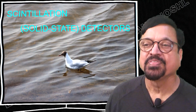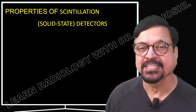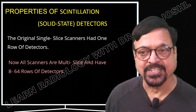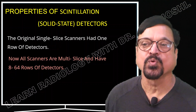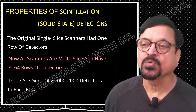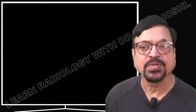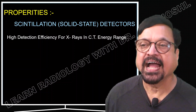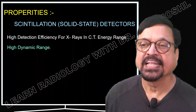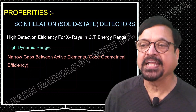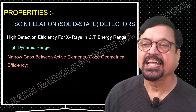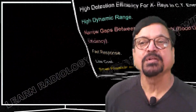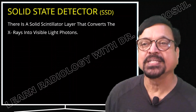Solid-state detectors are used in all modern machines today. The original single-slice scanner had one row of detectors, but all current scanners are multi-slice with 8 to 64 rows of detectors depending on machine design, and generally 1,000 to 2,000 detectors in each row. Because they are small in size, more can be fitted. Scintillation solid-state detectors offer high detection efficiency for X-rays in the CT energy range, high dynamic range, narrow gaps between active elements (good geometric efficiency), fast response, low cost, and small physical size — allowing more detectors to be fitted to increase resolution.